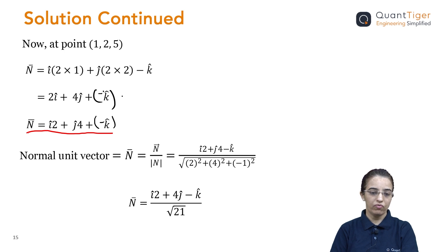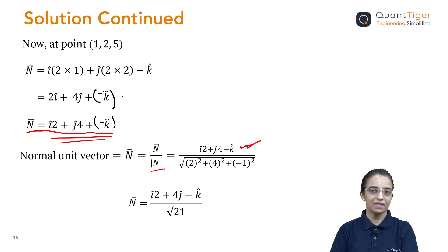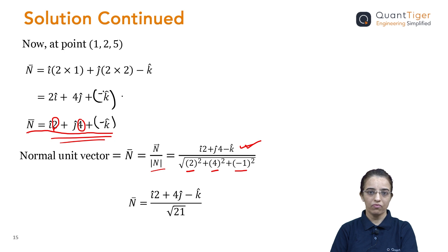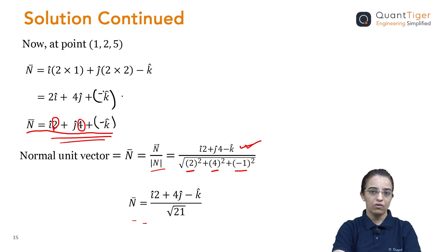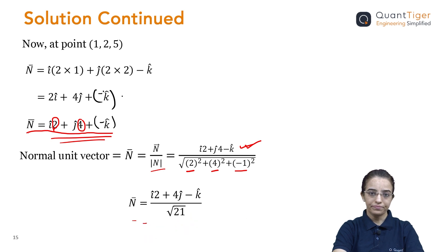The normal vector is taken as the numerator. We divide it by its magnitude. Magnitude is calculated as the square root of x² + y² + z², where here x=2, y=4, and z=−1. We square each value, add them together using the formula, and take the square root. So this is the normal unit vector — the perpendicular unit vector — to the given surface at point (1, 2, 5). This was the question which was asked.